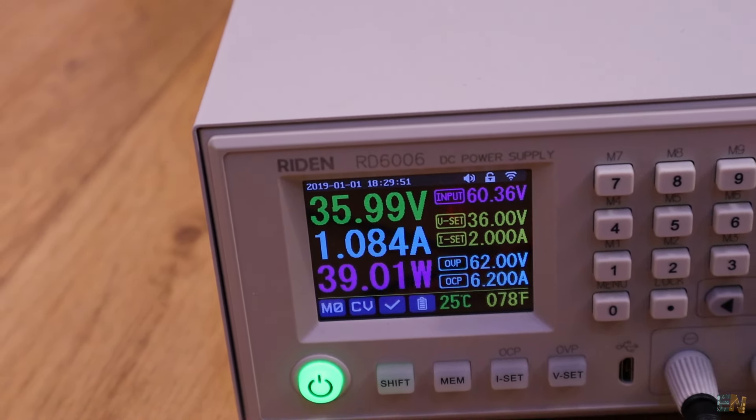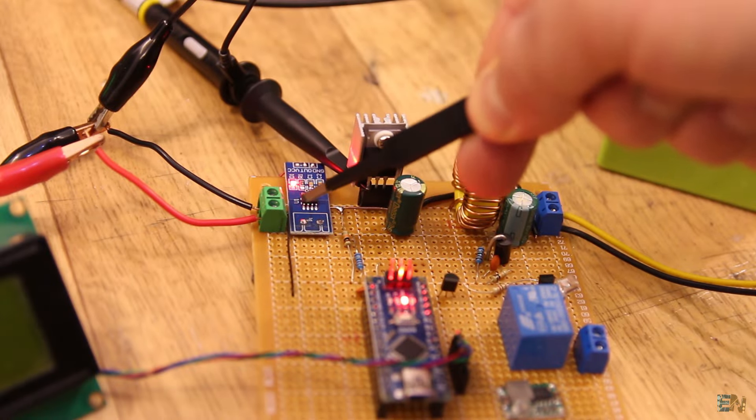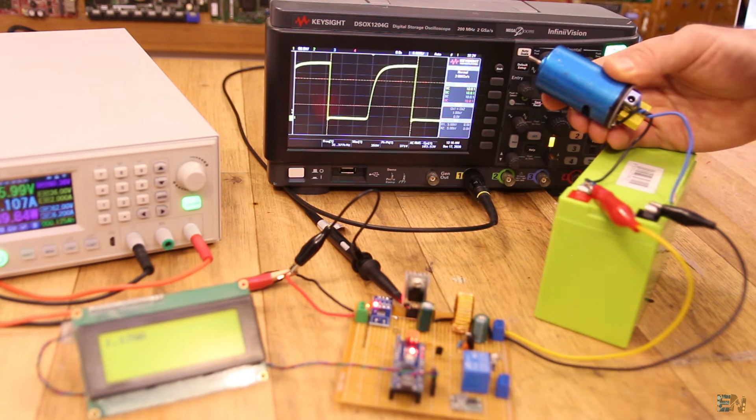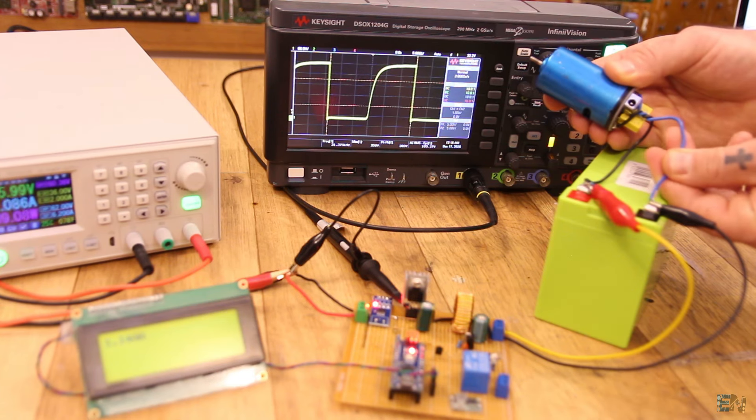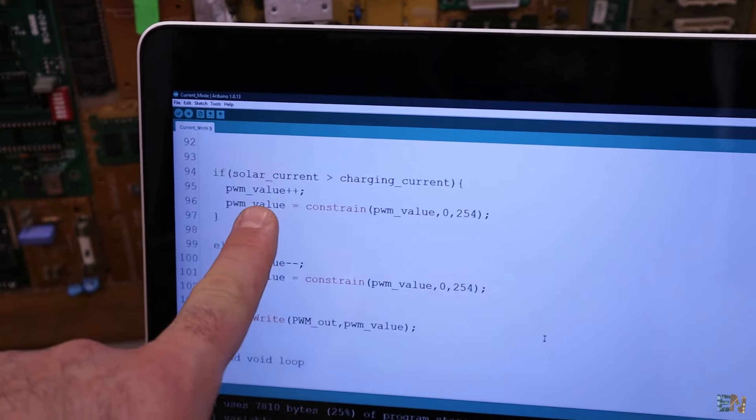Well, if the Arduino detects with the sensor that the current value is higher than 1A, it will lower the PWM signal applied to the MOSFET. If the current value is lower than 1A, it will increase the duty cycle. So we do this fast enough so the current will stay at that value.